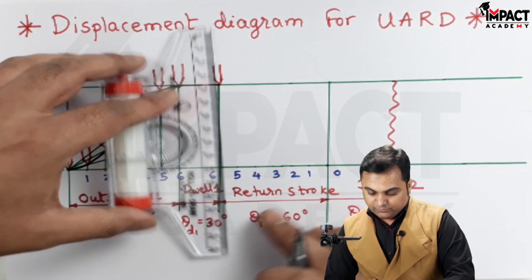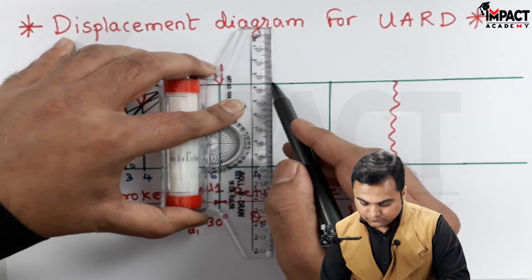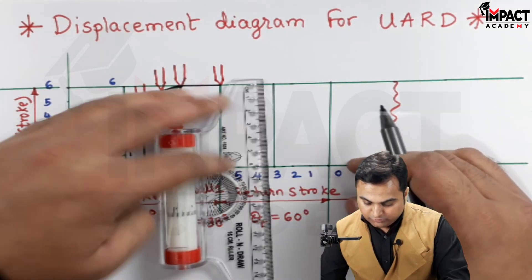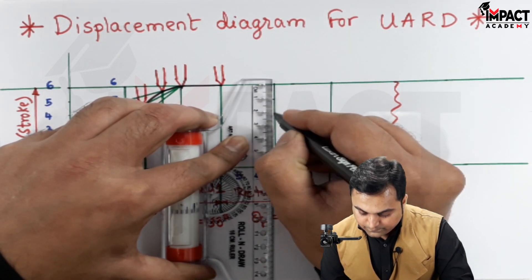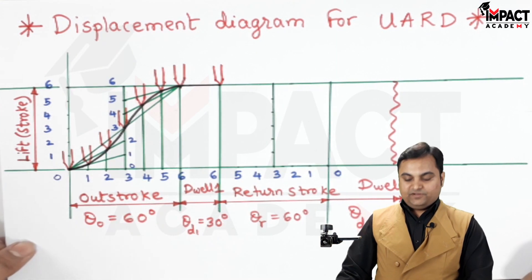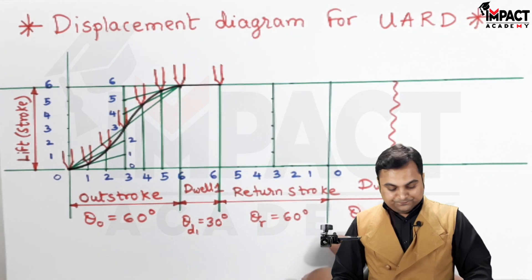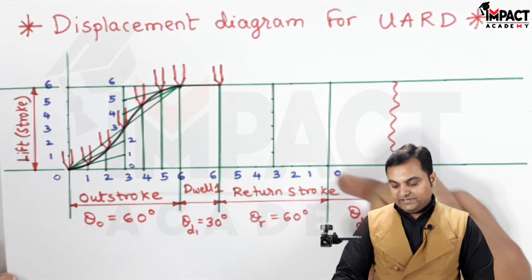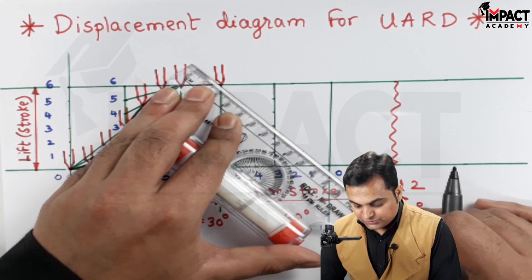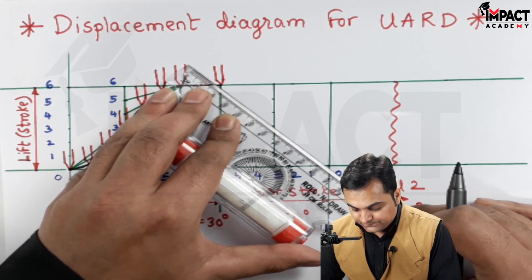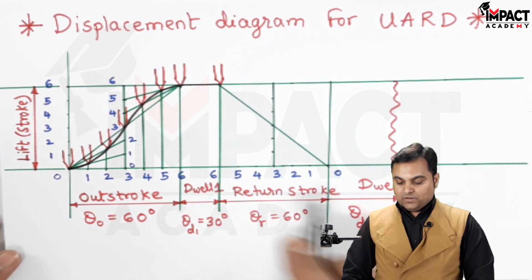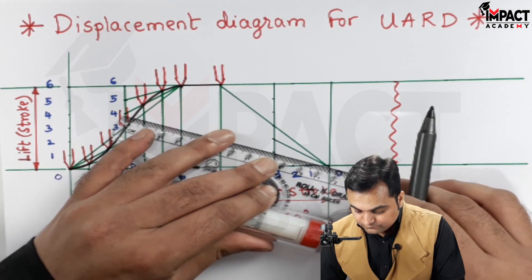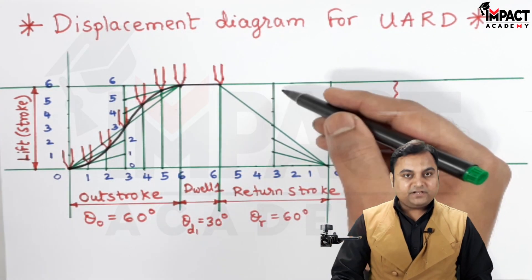Then the follower starts to return. For the return stroke, I project a line from the midpoint as a light line, divide this vertical line into 6 equal parts similarly, and then connect the diagonal. Since it was ascending during the outstroke, for the return stroke the diagonal should decline — going in a decreasing manner, returning to the original position. Points below this diagonal are connected to point 0, and points above are connected where the dwell ended.